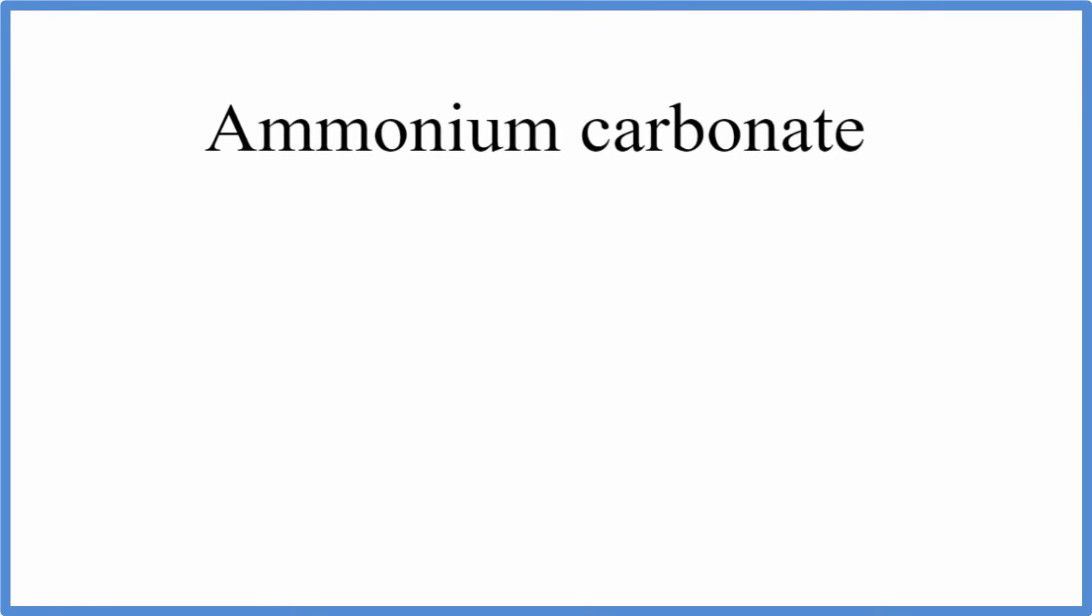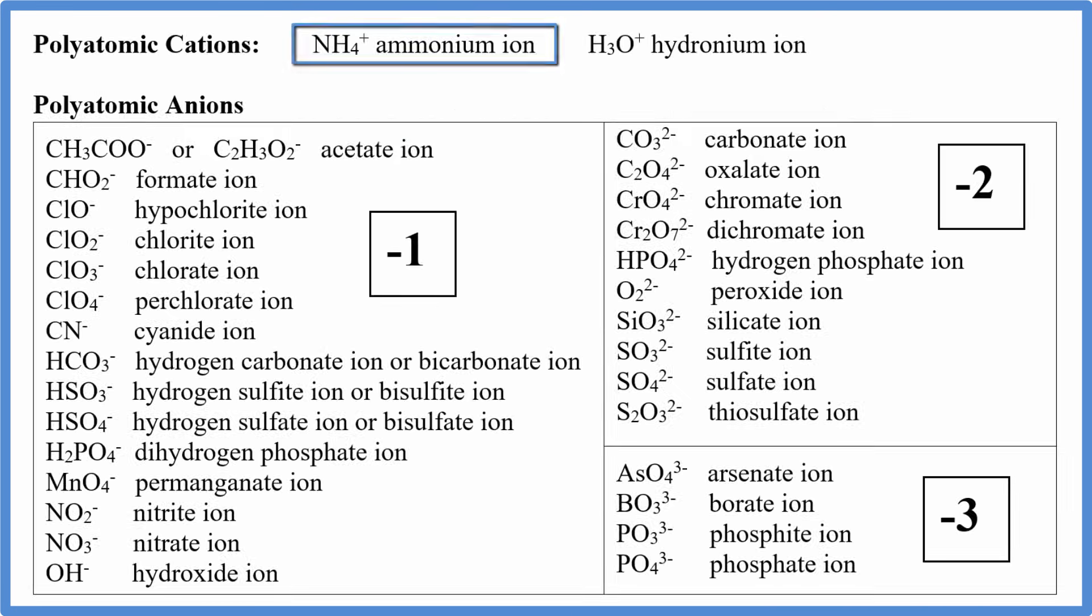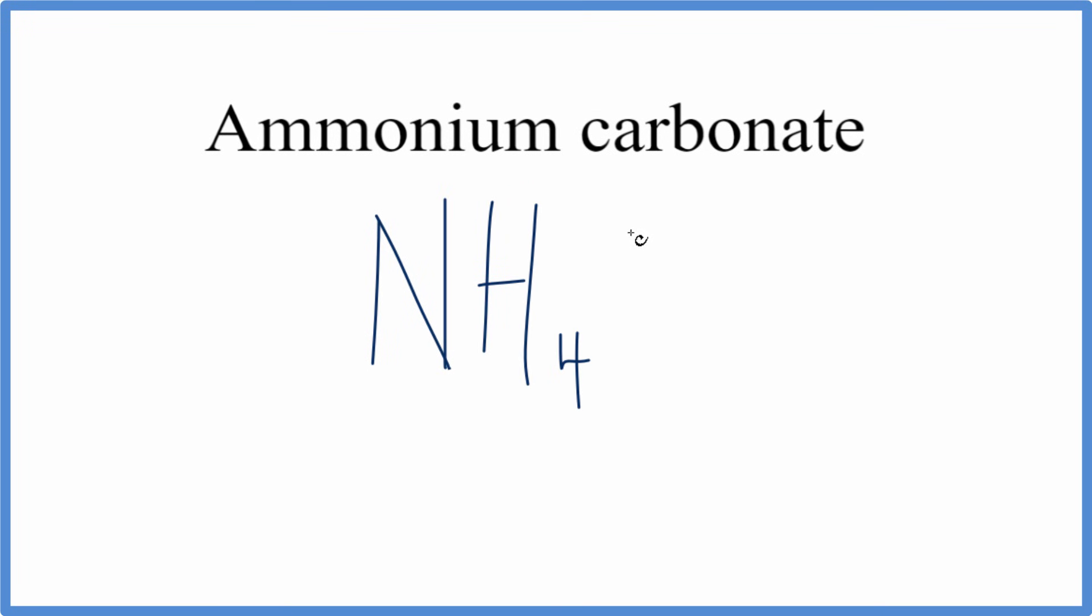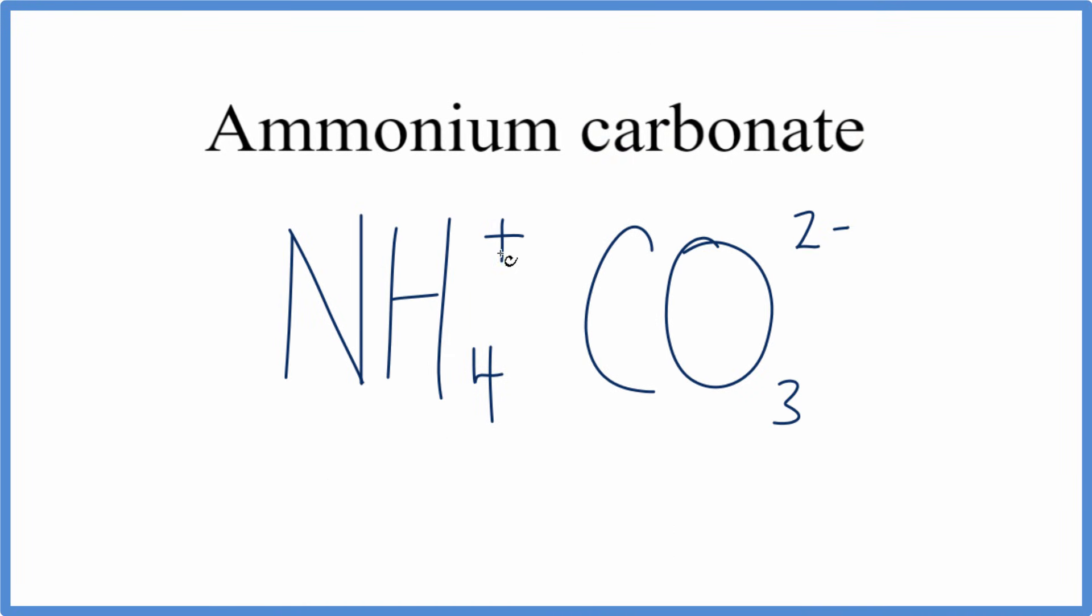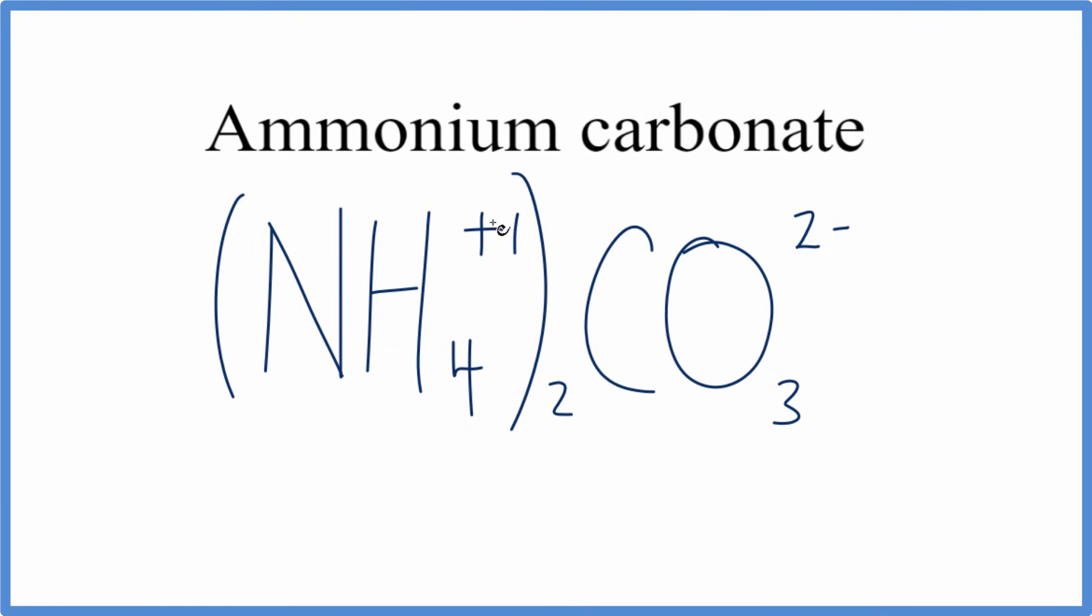For ammonium carbonate, we have 2 polyatomic ions. So we look up ammonium on the common ion table, and that's NH4, and it has a positive charge. Carbonate, we know, is on the polyatomic table too, because it ends in A-T-E, and it's CO3 2 minus. We have this plus 1 charge here, and then we have the 2 minus. We know that we're going to need 2 NH4 ions to cancel out the minus 2 here. So if we put a 2 here, and then we need parentheses, that'll give us 2 times plus 1. So that plus 2 will cancel out this 2, and that makes this the formula for ammonium carbonate.